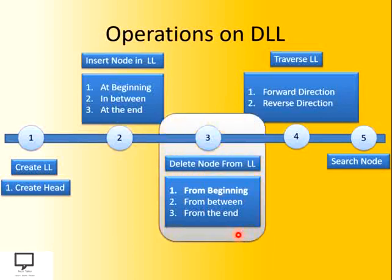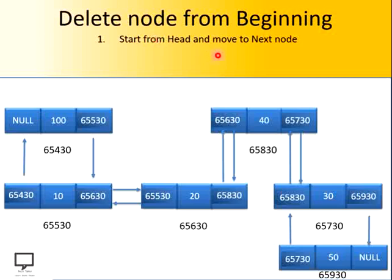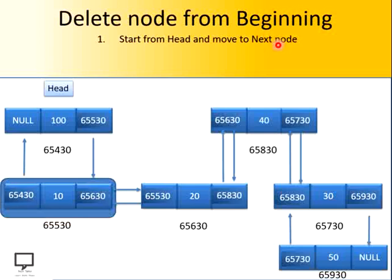Let's begin with deletion from the beginning — that is, if I want to delete the first node, what steps do I have to follow? Let's consider this doubly linked list and I want to delete the first node. To delete the first node, we are supposed to start from the head node and we have to move to the next node and stop.